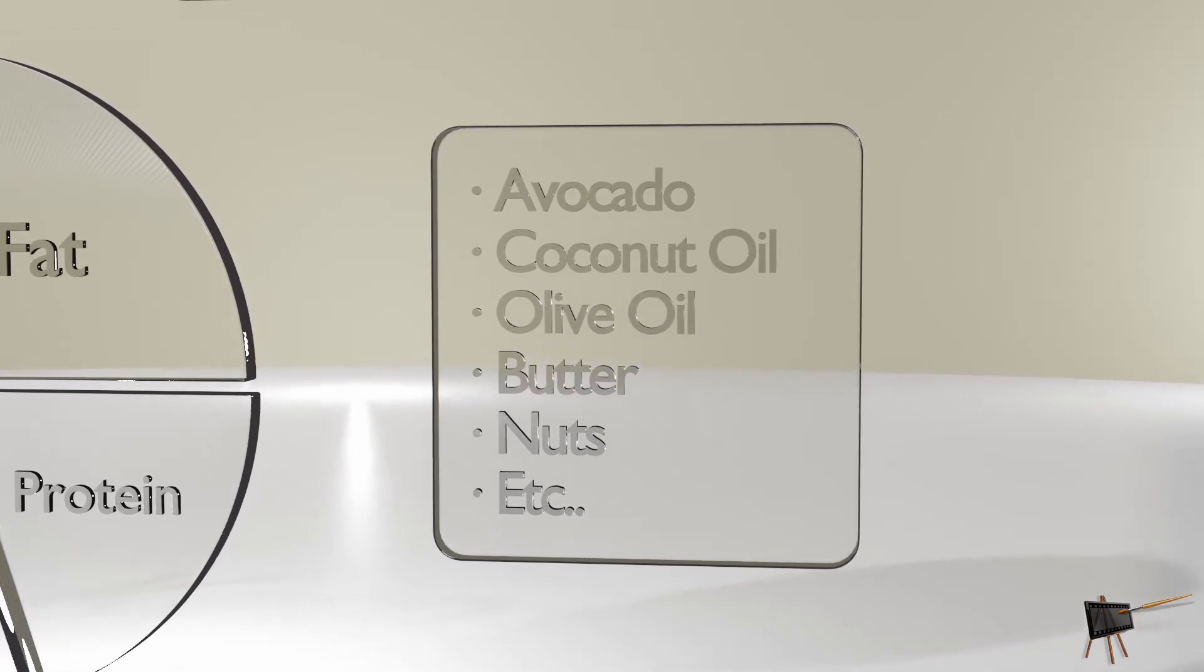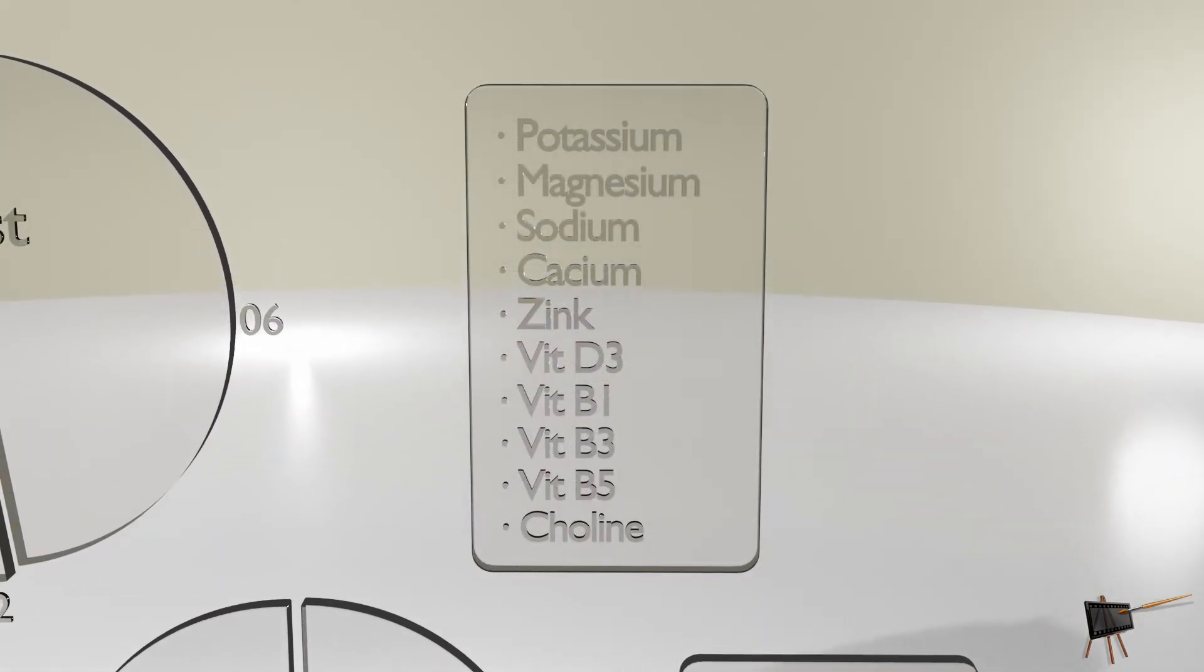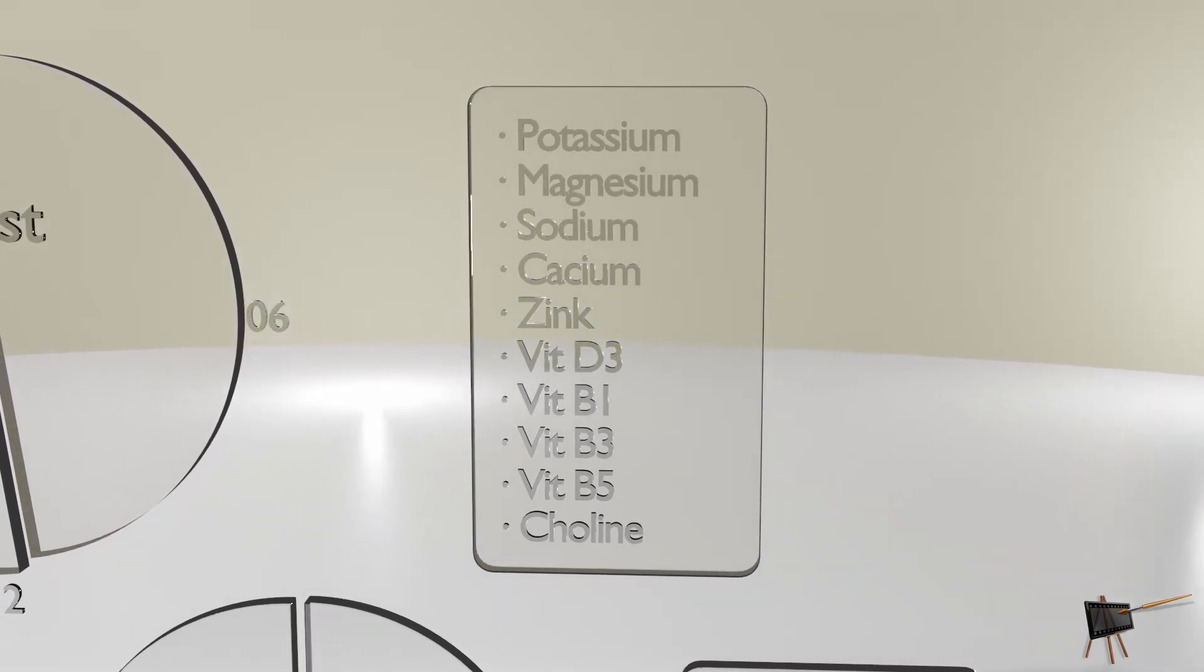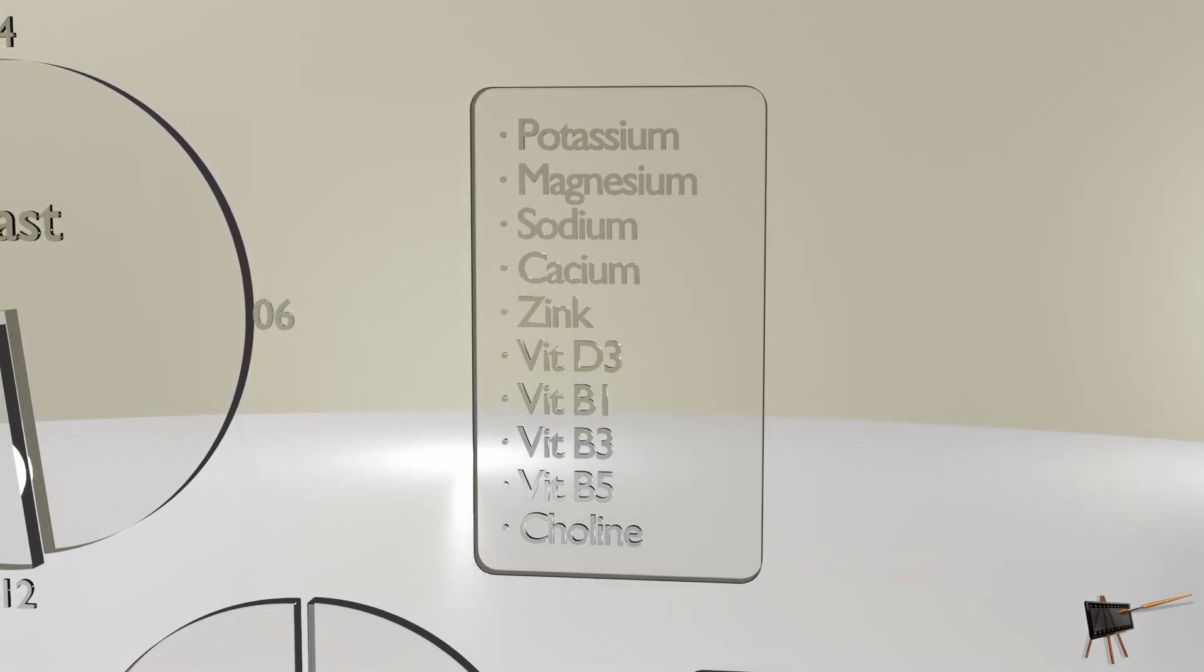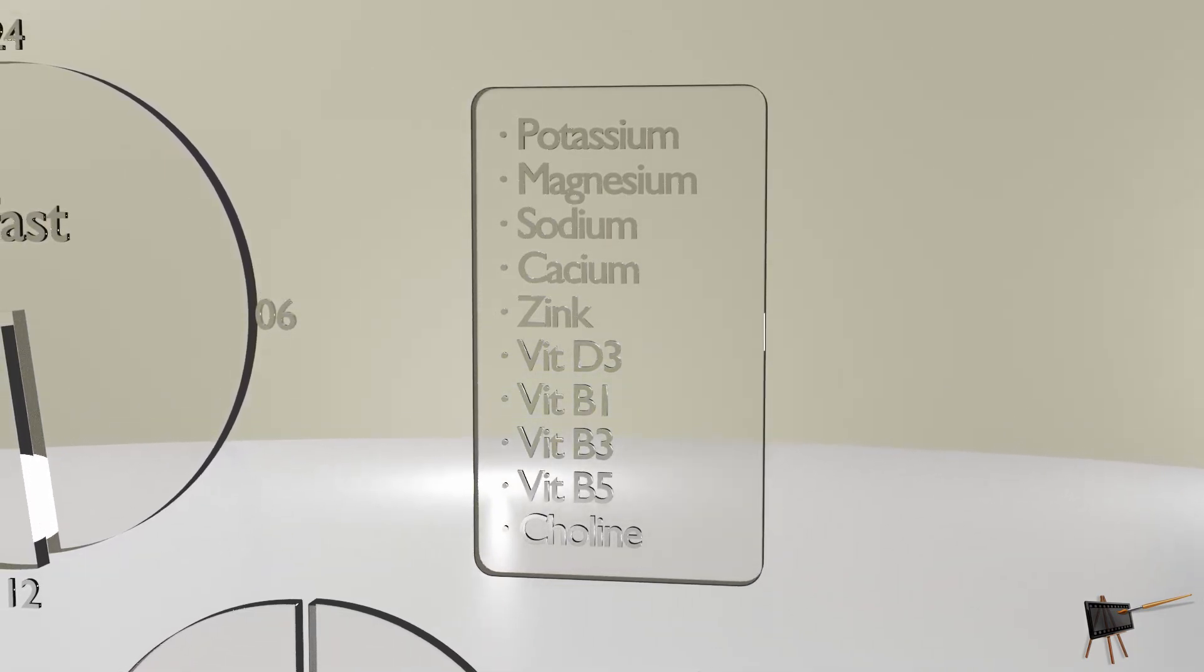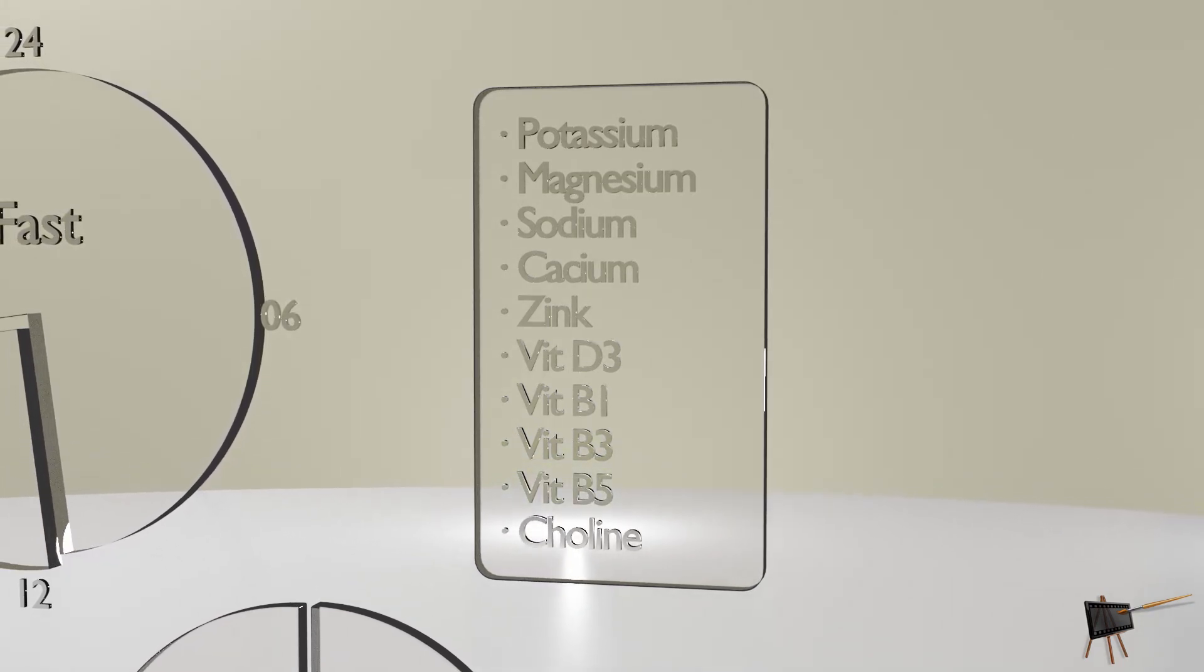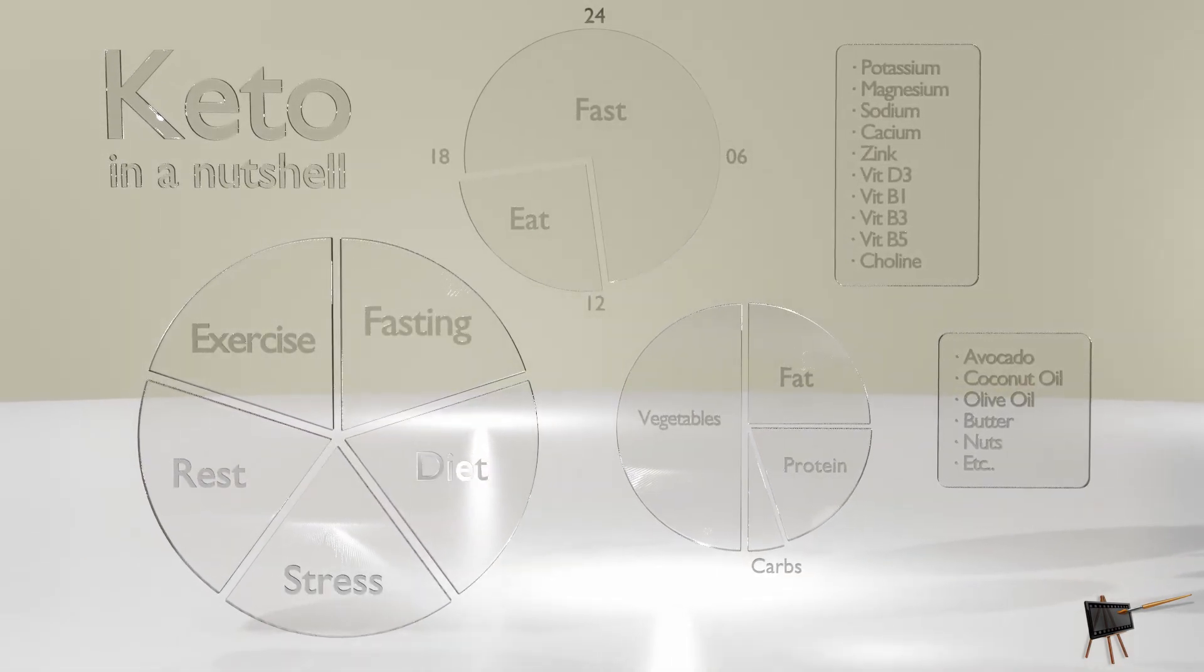In addition to all of this, you want to take supplements which includes potassium, magnesium, sodium, calcium, zinc, vitamin D3, vitamin B1, vitamin B3, vitamin B5, and choline, which is great for the fat that accumulates on the liver. And that is the diet in a nutshell.